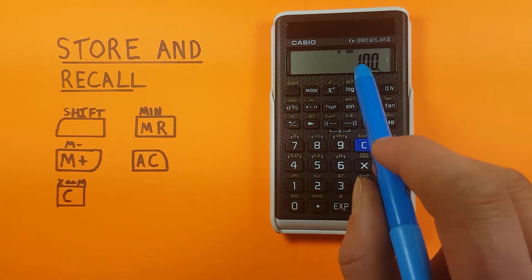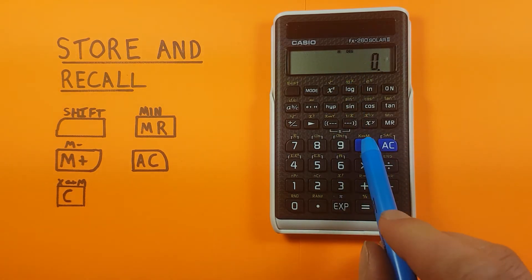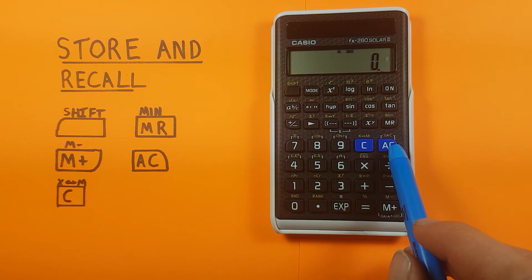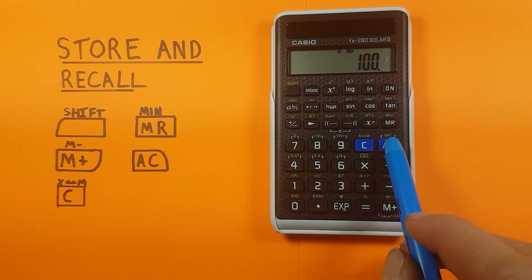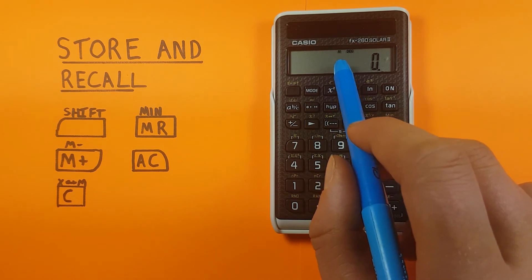We can clear our screen while maintaining that memory with the C key or the AC key. If we want to bring back our memory slot, we press the MR key. See, there's our hundred. We can clear the screen again with the AC key, and we still have that M above there.